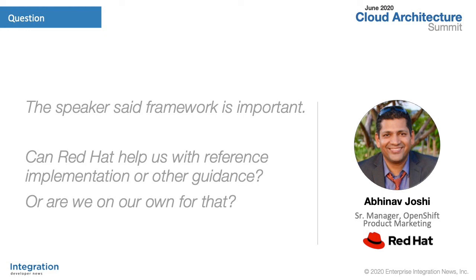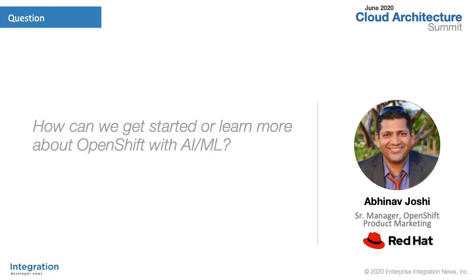Fantastic. Abhinav, I see time has just flown by. We could easily spend another half hour with you, but we have to close. Before you go, can you refresh us on the best ways people can go forward with OpenShift and AI/ML? The best place to start is openshift.com/ai-ml, which has links to reference architectures, the ecosystem, and success stories. We also have a YouTube channel — search OpenShift on YouTube and there's an AI/ML specific playlist. And we have an eBook on data pipelines on OpenShift and Kubernetes, which would also be a good place to start.